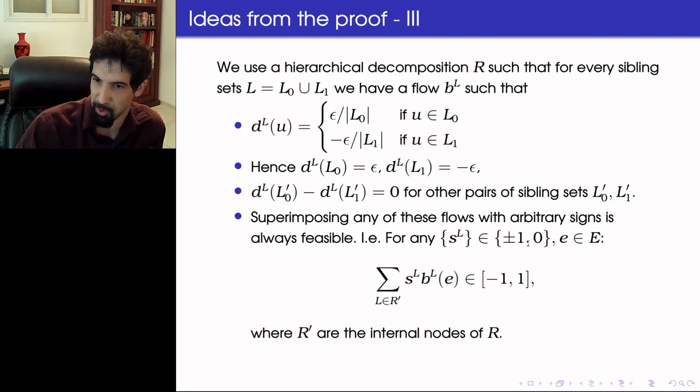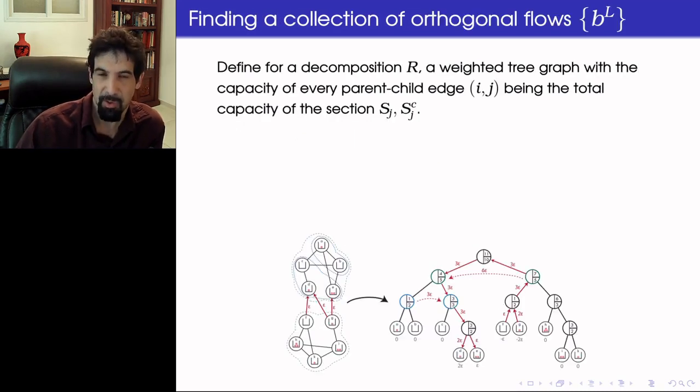So how can we find such a collection of orthogonal flows? So first let's discuss flows on the tree decomposition itself. So we view the tree decomposition as a graph, and for every edge in this tree, we assign a capacity, a maximum flow we allow in it, which is proportional to the number of edges in the section of the child set to the remainder of the graph.